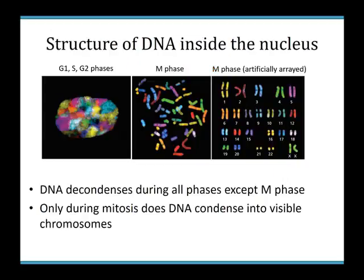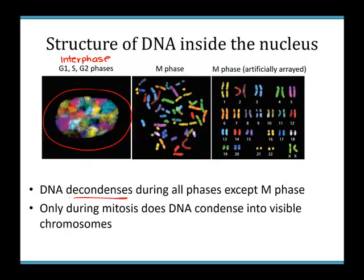Let's look at the DNA inside the nucleus. During interphase — G1, S, and G2 — the DNA is decondensed: spread out so you can easily read any genes on those DNA molecules. When the DNA starts to condense and pack tightly together, that's when we see individual chromosomes, which really only happens as you approach M phase and during M phase.